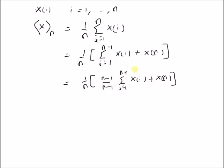If you look at this term, 1 by n minus 1 times this summation, this is the definition of the sample mean for n minus 1 values. So we have 1 by n times n minus 1 times the sample mean of n minus 1 values, plus the latest value x(n).